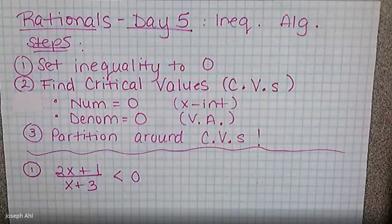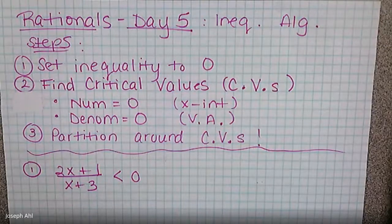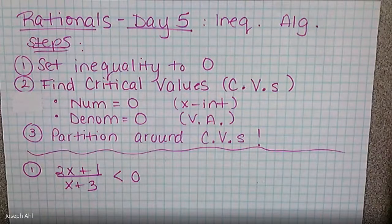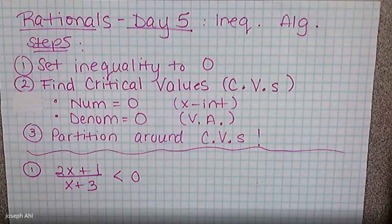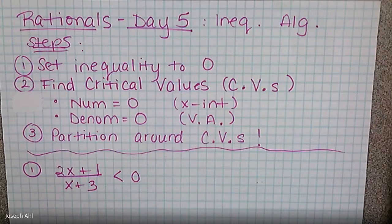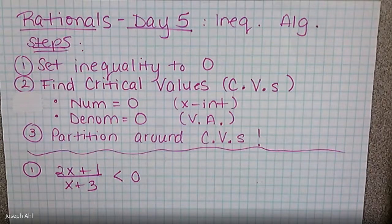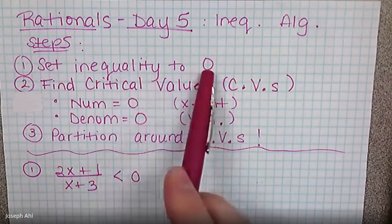Hey Algebra 2 Honors students, today is Unit 9 Day 5 on rational inequalities algebraically. Yesterday we got a quick look at what rational inequalities look like graphically, and today algebraically it's going to be a very similar process in terms of breaking the graph up. We're just not going to necessarily have the graph in front of us, though we can check graphically if needed. Algebraically, here's what we need to do: set our inequalities to zero.